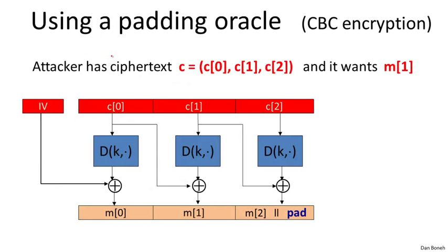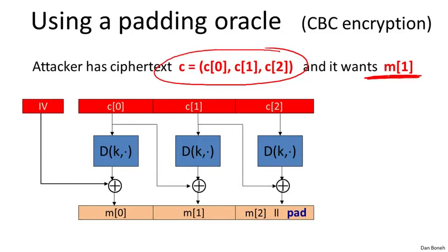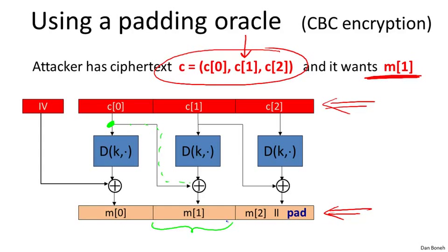So let's see how to use a padding oracle. If the attacker has a certain ciphertext C, he can completely decrypt it using the padding oracle. Suppose he wants to obtain M1 — the decryption of the second block of the ciphertext. Here we have the ciphertext the attacker intercepted and its decryption. Remember how CBC decryption works: one ciphertext block is directly XORed into the decryption of the next ciphertext block.